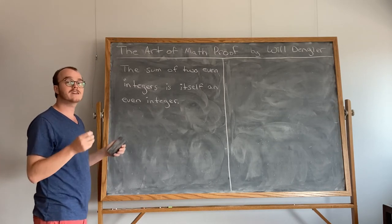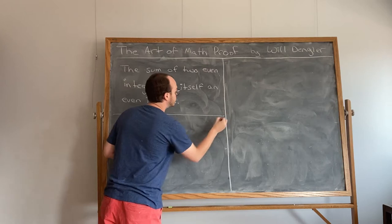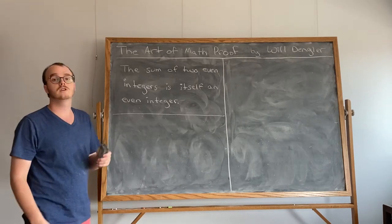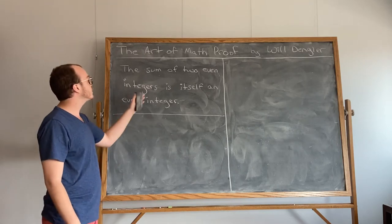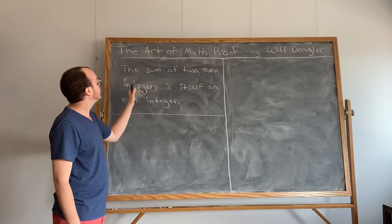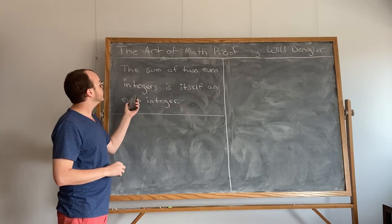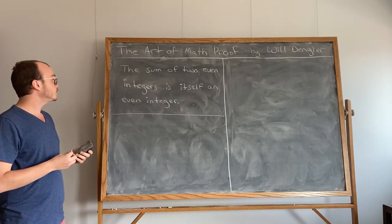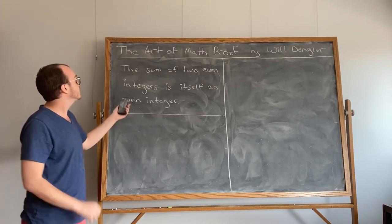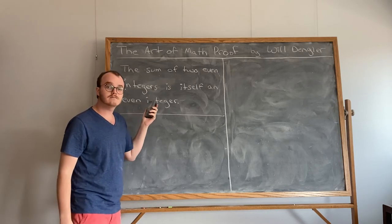A math proof is how we explain why this statement is true. If we want to show without a doubt that the sum of two even integers is itself an even integer, we're going to need to really understand what exactly the things we are talking about are in a very explicit manner. We're talking about adding integers — and not just any integers, but even integers in particular. So, if we want to prove something about this statement, we need to know what the integers are, how we add them, and what it means to be an even integer.